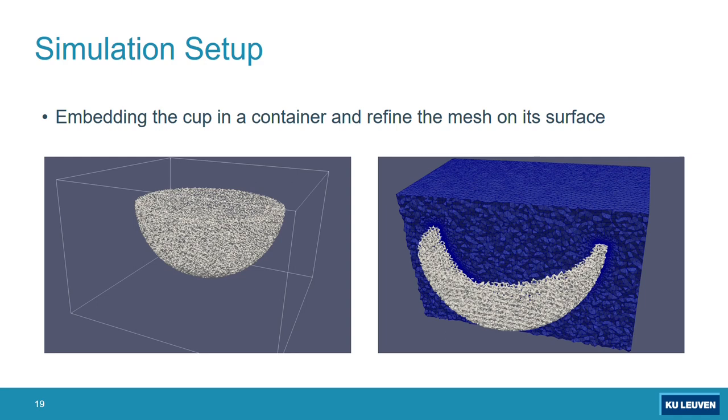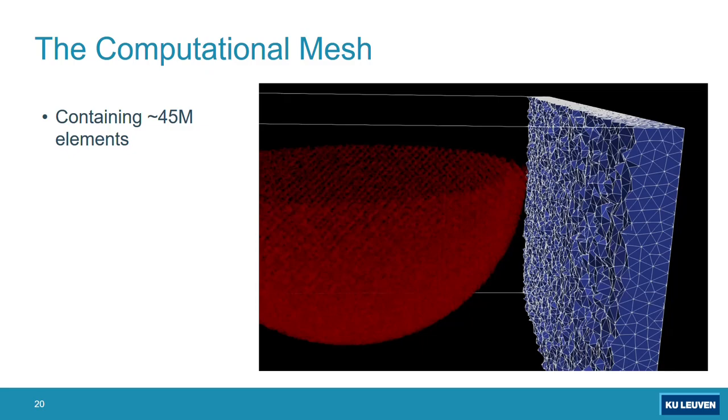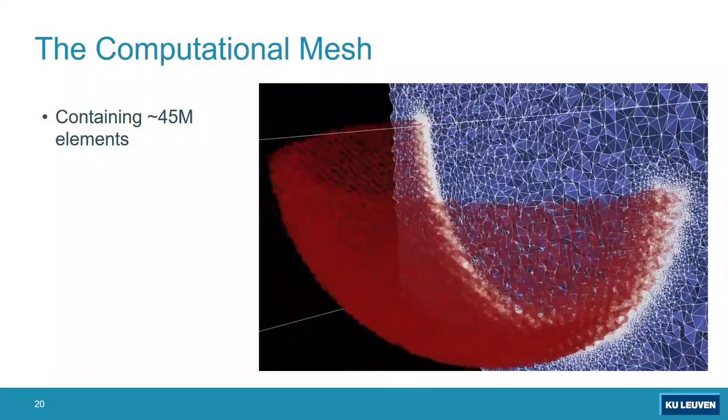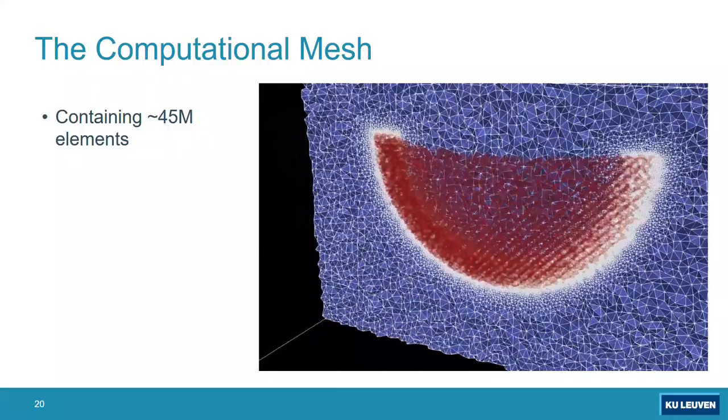The mesh would be like this, containing 45 million elements. This is an illustration showing why such a mesh contains 45 million elements, and you can see it's very fine at the interface. The red region, if you can see based on the lighting setup of this room, is actually just a visualization of the real implant, but that's actually embedded inside a mesh.